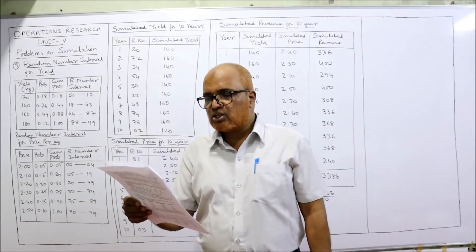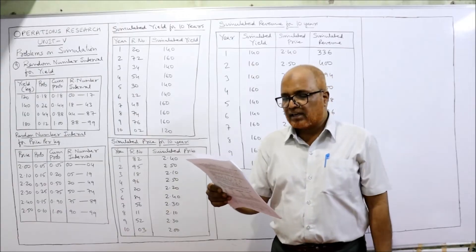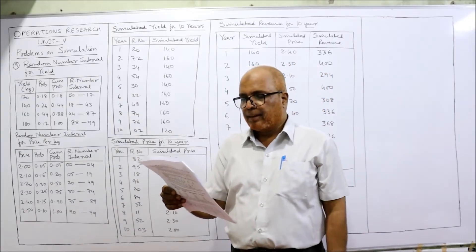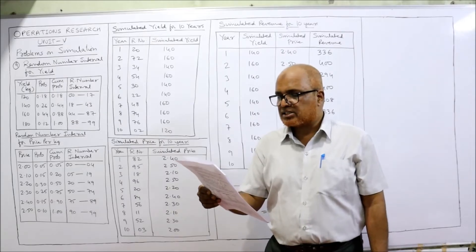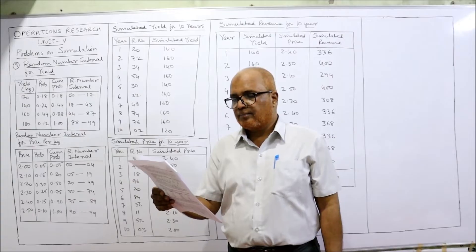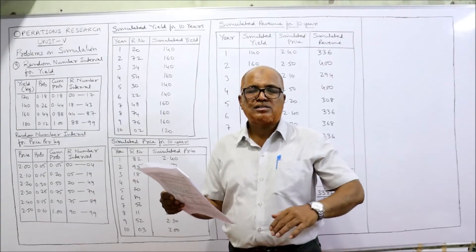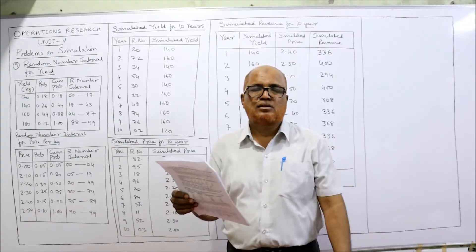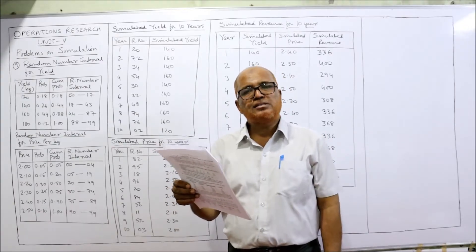She would like to see a simulation of the yield she might expect over 10 years for weather conditions similar to those she is now experiencing. Simulate the average yield she might expect per acre using the given random numbers. The first question asks us to find the simulated yield for the next 10 years, and random numbers are provided.